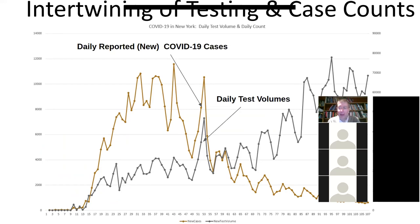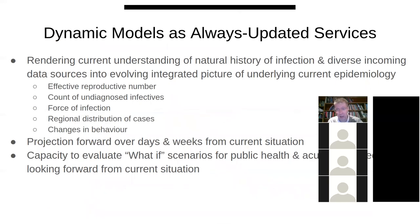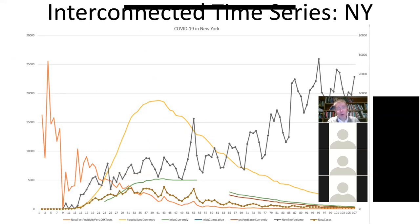That perspective gives you a better understanding, for example, of how to make sense of case numbers in a context where we're testing more and more frequently. There's a natural question: these ups and downs we see of cases — how much of that is really due to changes in how the bug is spreading versus how good we are at finding them? And this goes on in countless conditions — infectious diseases, chronic diseases, environmental conditions, etc.